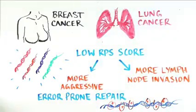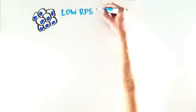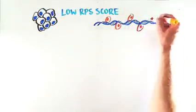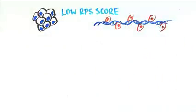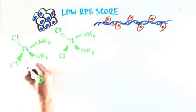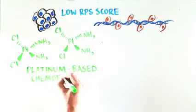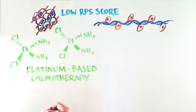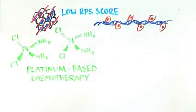The scientists took this a step further and wanted to find a way to treat these tumors with a low RPS score that introduce errors when they repair DNA. They found that specific types of chemotherapy that are based on platinum can very efficiently kill cancer cells that have a low RPS score and that repair DNA using the error-prone method.